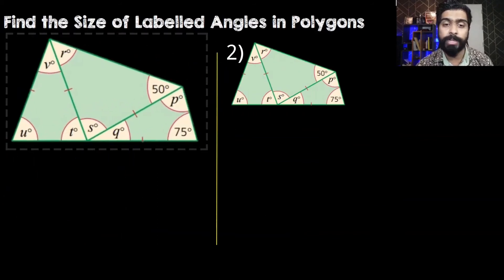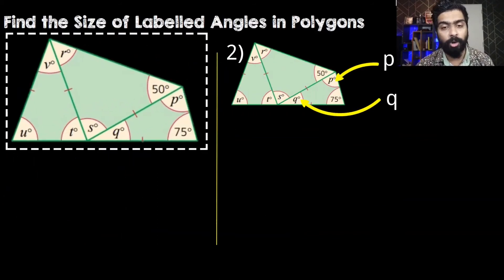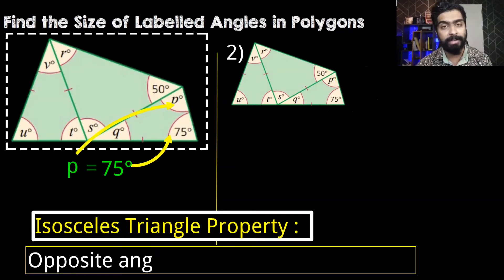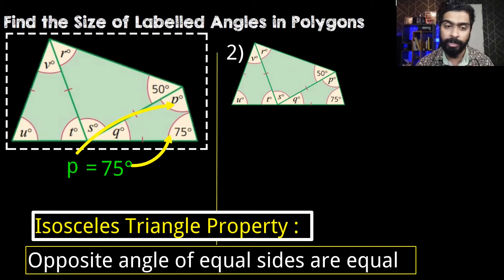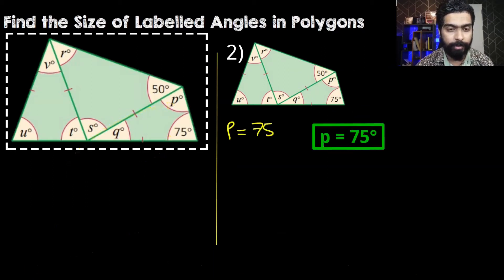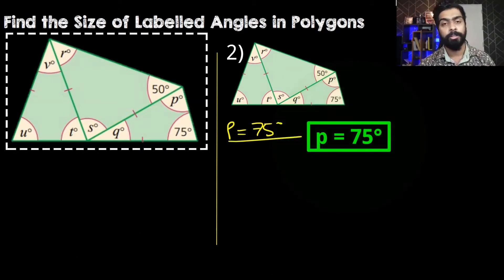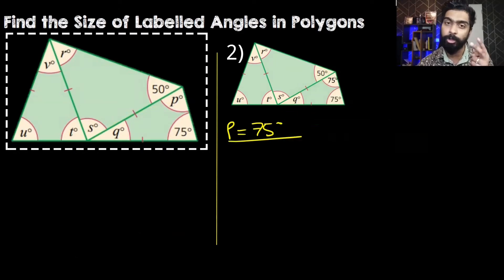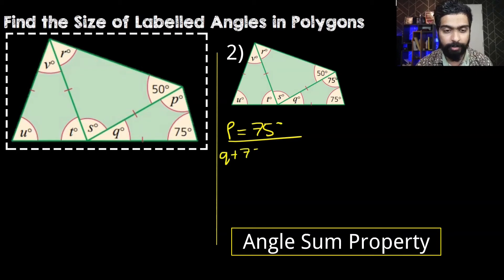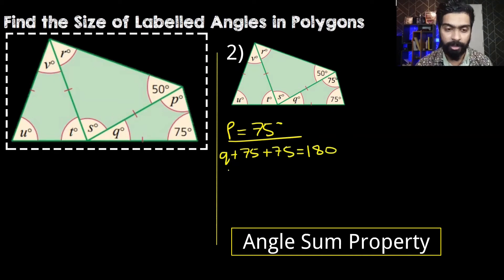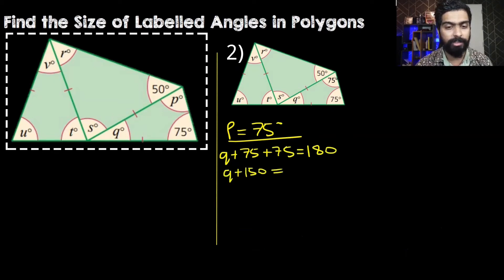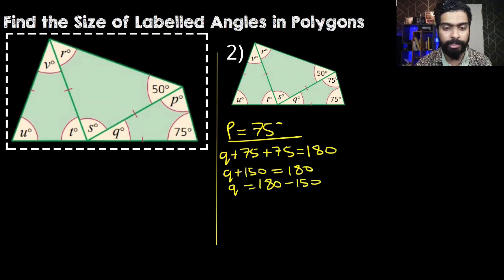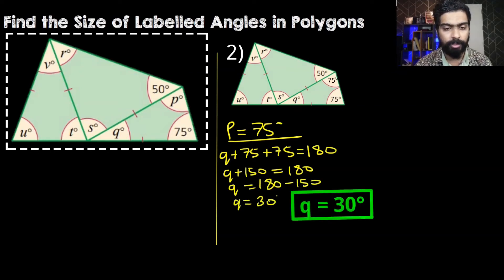First we are going to find angle P and Q. We know that this angle is 75 degrees, and the angles opposite to the equal sides are always equal, so P is immediately 75 degrees. Now in this triangle we know two angles, so we can find the third straight away. Q plus 75 degrees plus P which is 75 degrees adds up to 180. So Q plus 150 equals 180, therefore Q is equal to 30 degrees.